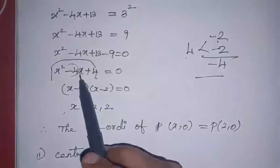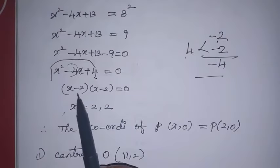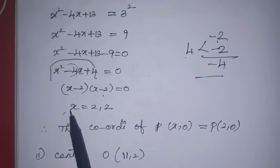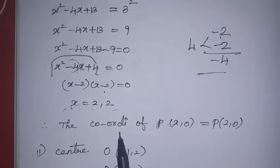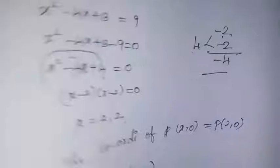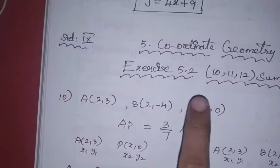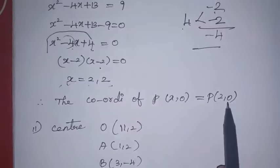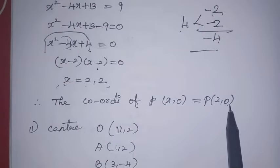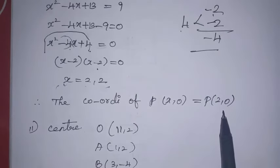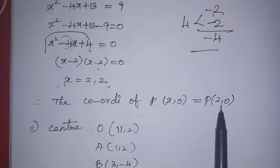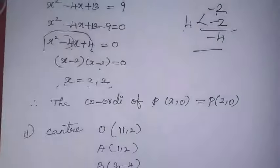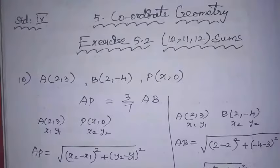Factoring: (x − 2)(x − 2) = 0, so x − 2 = 0, giving x = 2. Therefore, the coordinate of P is (x, 0) = (2, 0). The 10th sum is now clear.